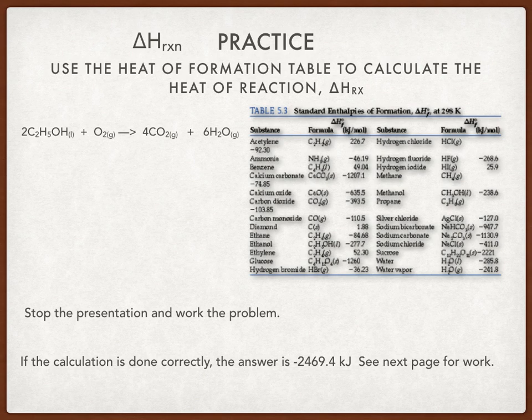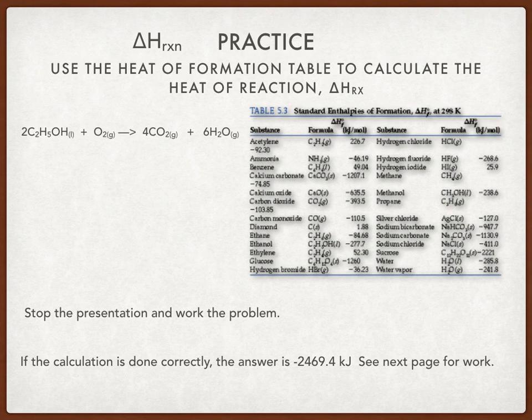Let's take a look at another example — calculate the delta H of the reaction. Use the heat of formation table to calculate the heat of the reaction. The first thing we need to do is find C₂H₅OH, which is ethanol. It's about the fifth one from the bottom on the left-hand side of the table, and notice it has a value of negative two seventy-seven point seven.